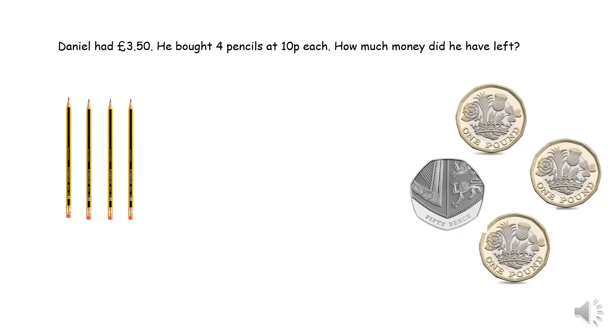Daniel had £3.50. He bought 4 pencils at 10 pence each. How much money did he have left? Pause the video and have a go.